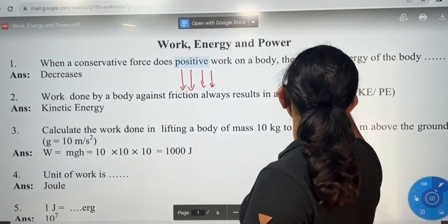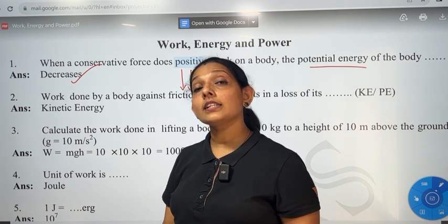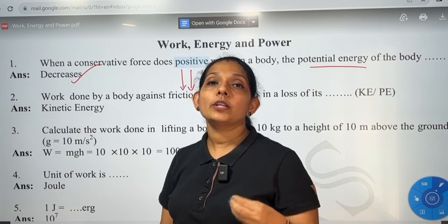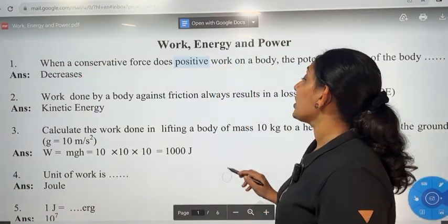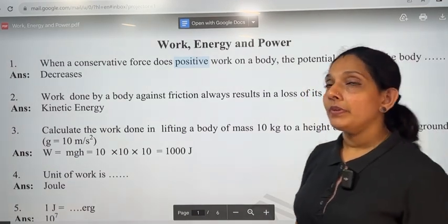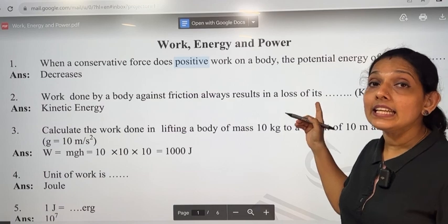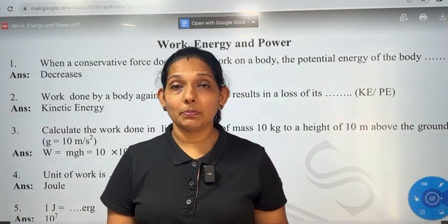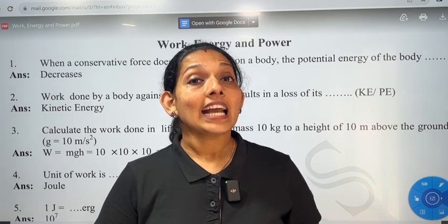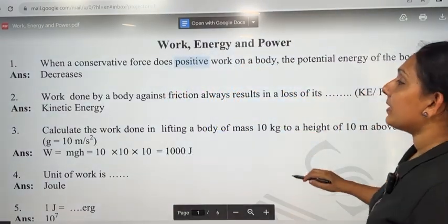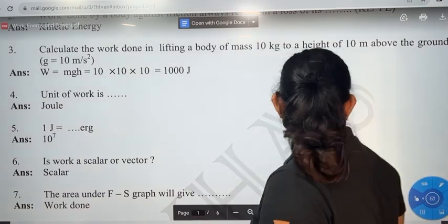When a conservative force does positive work, the potential energy decreases. When the conservative force does negative work, the potential energy increases. Second question: work done by a body against friction always results in a loss of its kinetic energy, because friction force opposes motion and we need energy to overcome it.